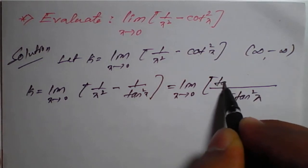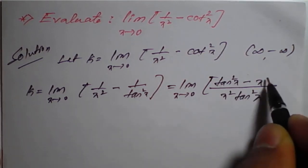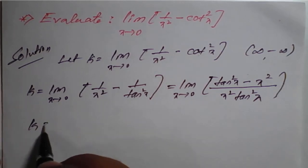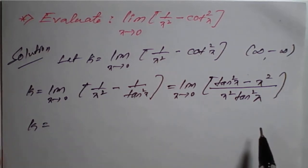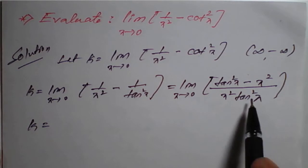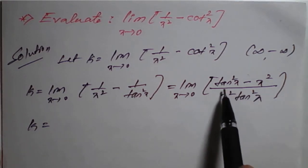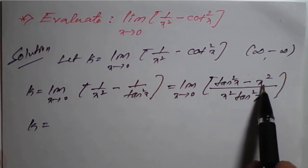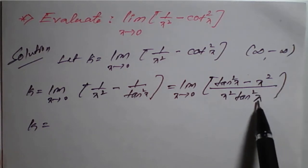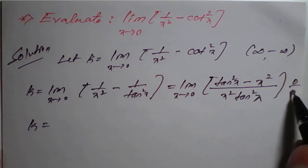After cross multiplying, the expression becomes (tan square x minus x square) divided by (x square into tan square x). Checking this: if we apply x tends to 0, tan of 0 is 0, and 0 square is 0, so it is 0 by 0 form.